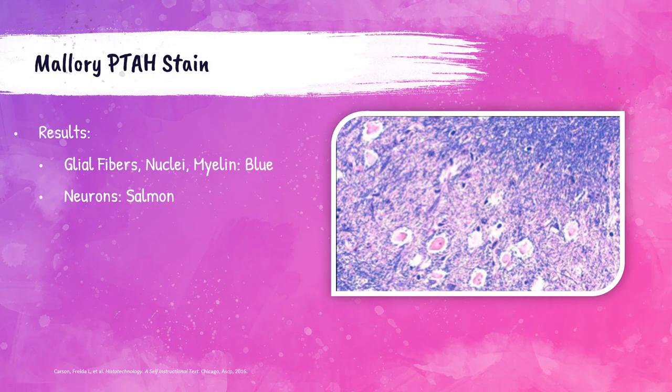When stained with Mallory PTAH, glial fibers, nuclei, and myelin will be blue; neurons will be salmon (pinkish). The photo shows glial fibers and myelin in blue and neuron cell bodies in salmon pink. Note there is a lack of intensity with this stain, and because both glial fibers and myelin stain blue, interpretation can be difficult.